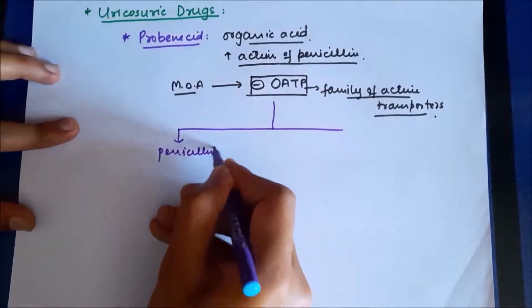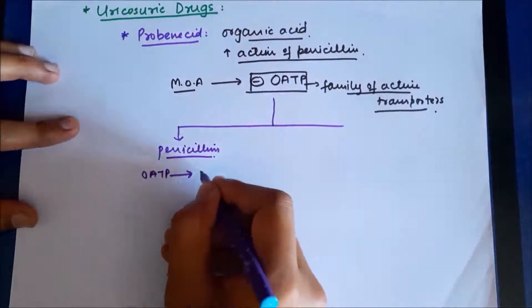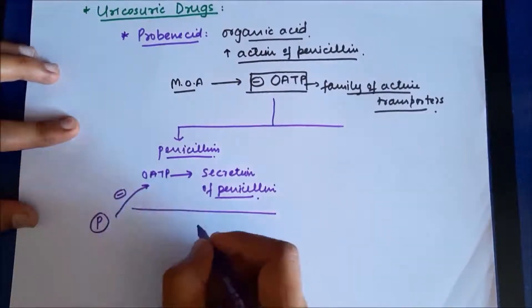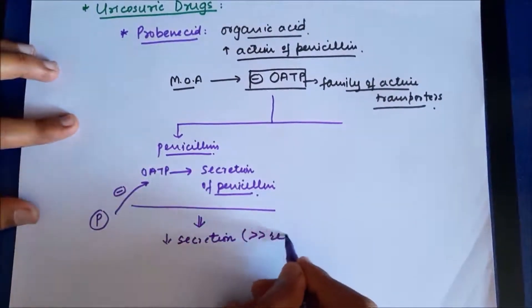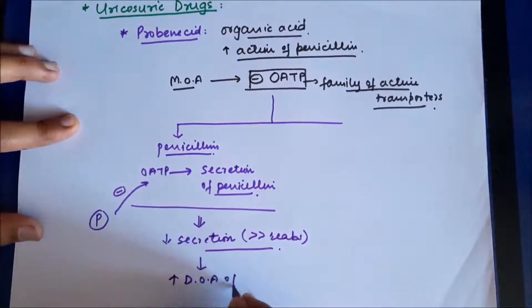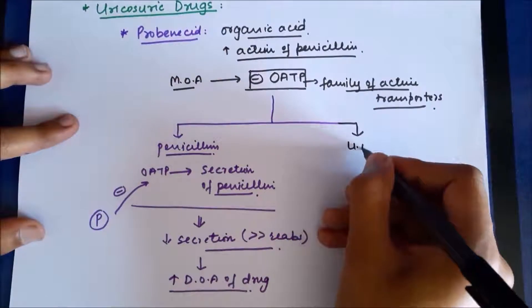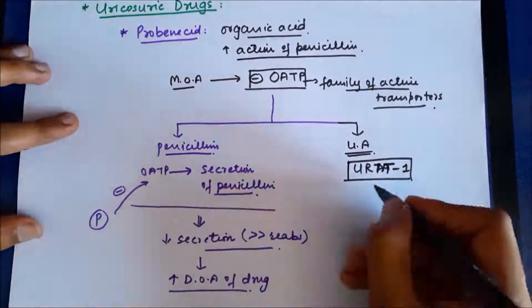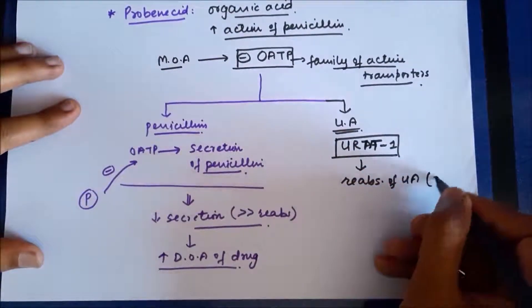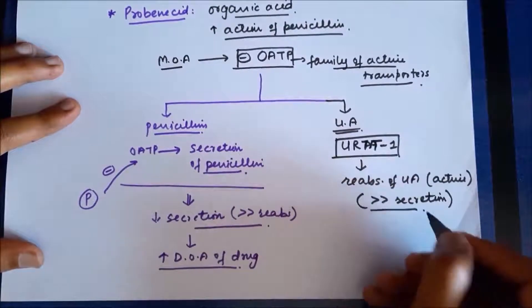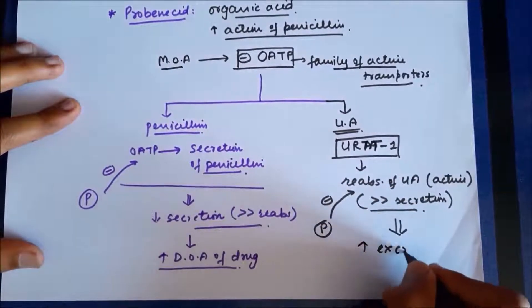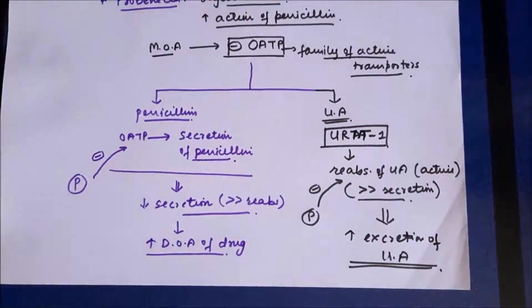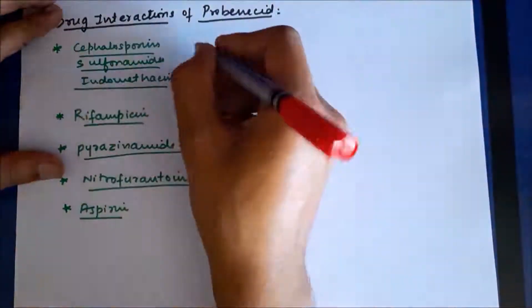In the case of penicillin, these transport proteins are responsible for active secretion of penicillin in the renal tubule. Probenecid inhibits this protein, decreasing secretion, which is more prominent than reabsorption, resulting in decreased excretion of penicillin and increasing its duration of action. In the case of uric acid, a transporter called URAT1 is responsible for active reabsorption of uric acid in the renal tubule. Since reabsorption is more prominent than secretion, probenecid inhibits this reabsorption and increases excretion of uric acid, making it useful in chronic gout.